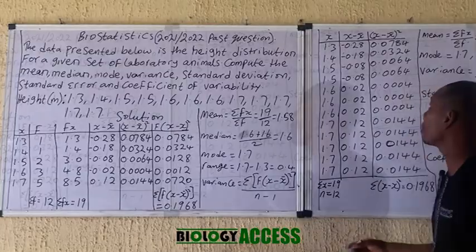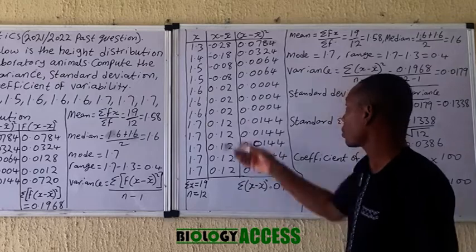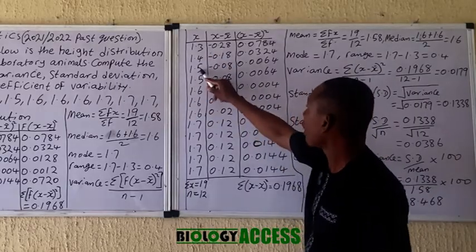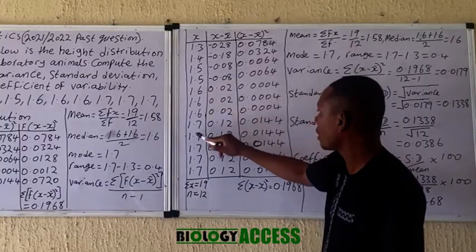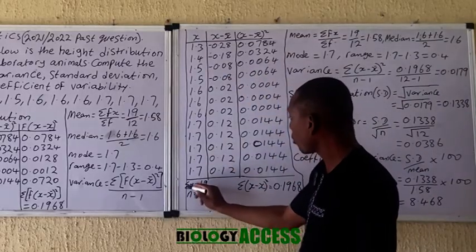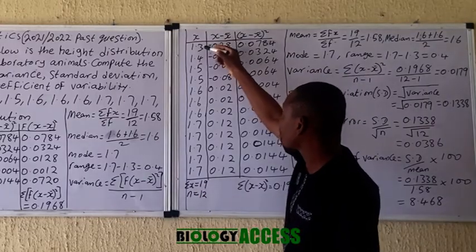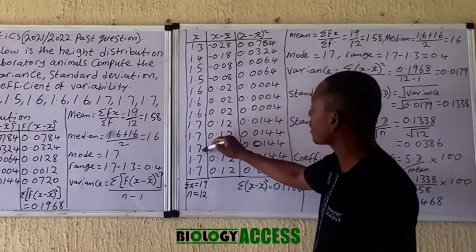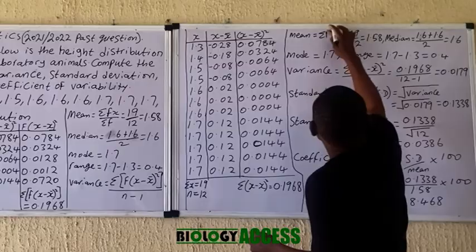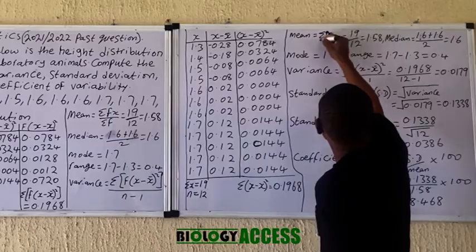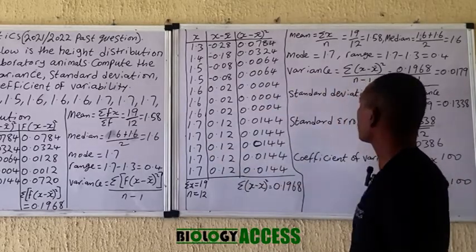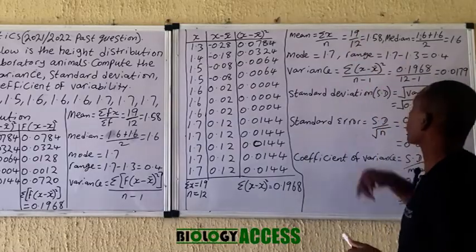The second method is simpler. Since there are not many distinct values, you can use the straightforward method — just list all the x values directly. So: 1.3, 1.4, 1.5 twice, 1.6 three times, and 1.7 five times. After listing them all, sum everything: the summation of x equals 19. Count the total number of values: 1, 2, 3, 4, 5, 6, 7, 8, 9, 10, 11, 12 — giving n = 12.